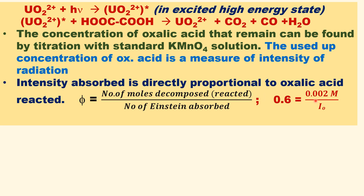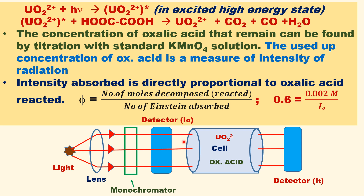Using the number of moles decomposed and the quantum yield, we can calculate the intensity of light emitted from the source. So actinometry is a device to measure the intensity of light radiation absorbed or emitted from the source. Let us now see the instrumentation and experimental setup for chemical actinometry.